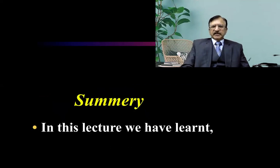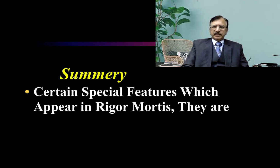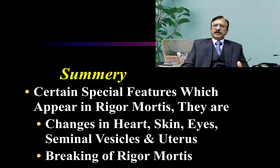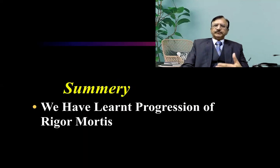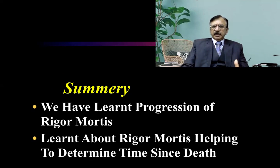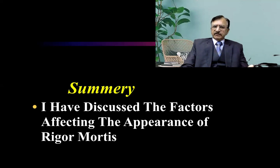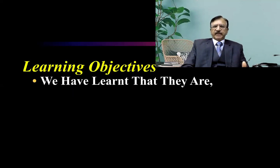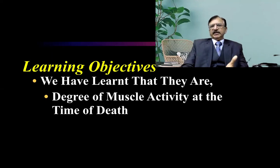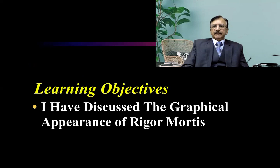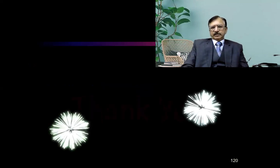Summary of today's lecture: we have learned certain special features of rigor mortis in the heart, skin, eyes, seminal vesicle, and uterus — which may not be confused with pathology. We discussed breaking of rigor mortis, how it progresses, how it helps in determination of time of death, and various factors affecting its appearance — degree of muscle activity at the time of death, environmental temperature, age, and glycogen reserves of the individual. We also discussed the graphic representation of rigor mortis.